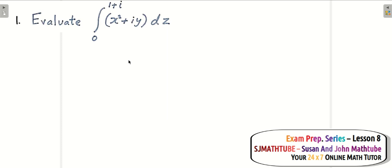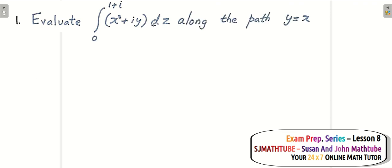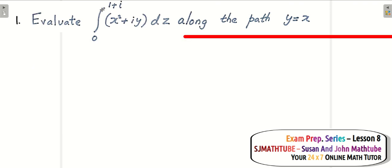We have a complex integral. In the two-dimensional plane there are many many points, and we want to integrate from 0 to 1+i. Integration means addition, and the path is given: integrate through y equal to x. Since y=x is a line passing through the origin, we need to collect all the points from (0,0) to (1,1). Let's convert everything into x.